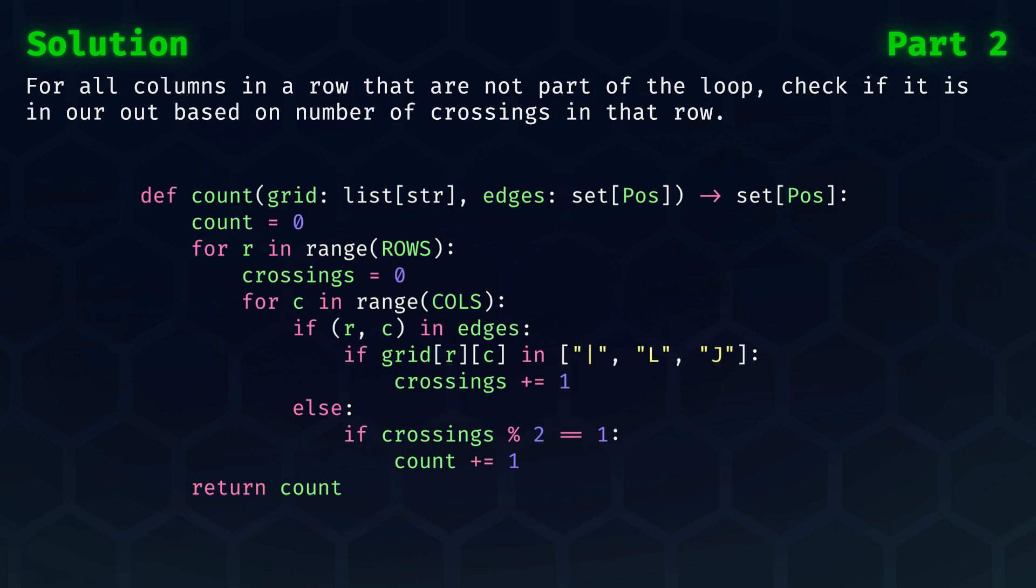And last, but certainly not least, here is the actual counting function. For every column in a row, if that column is not part of the loop, then we check if that column, or position, is inside or outside of the loop, based on the number of crossings up to that point in the row.